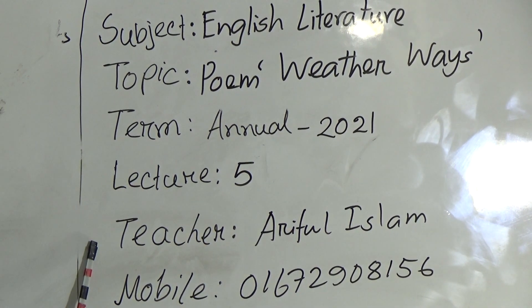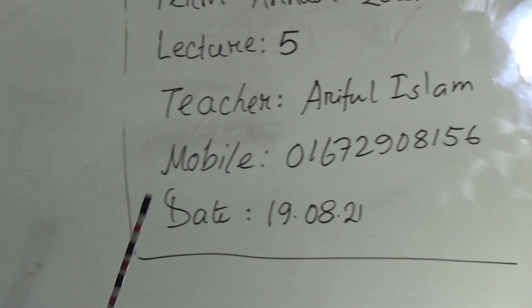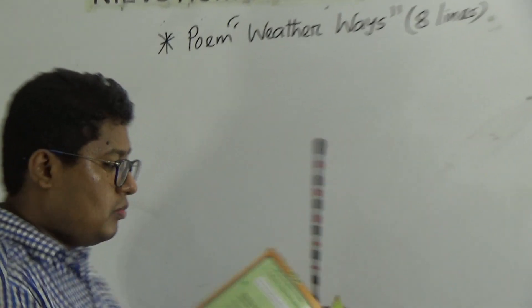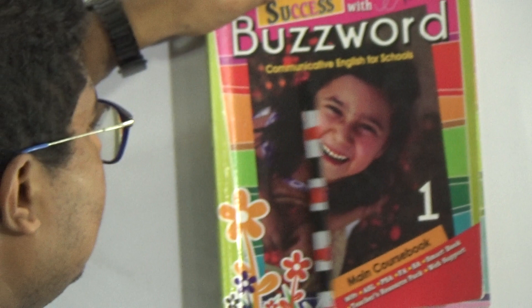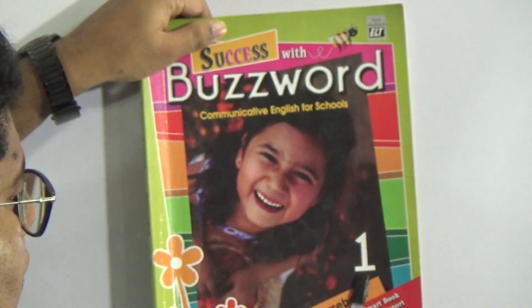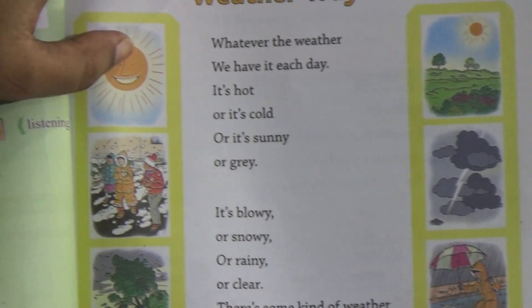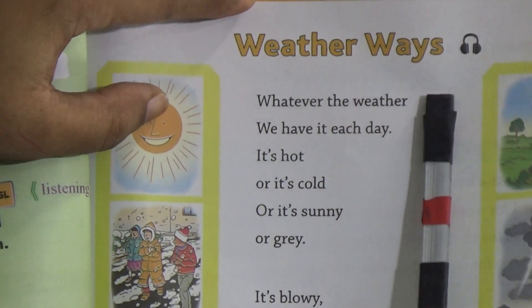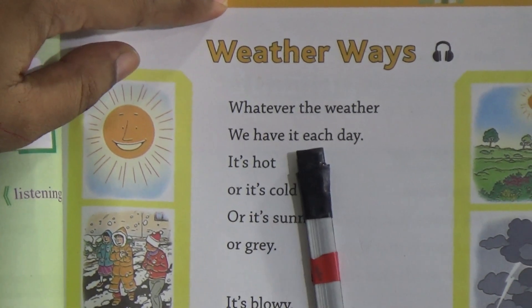My dear students, open your book — 'Success with Buzzword Communicative English for Schools', main course book one. Go to page number 63. Today we will write only eight lines of the poem 'Weather Ways'.